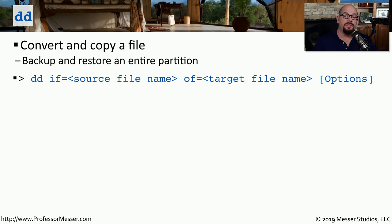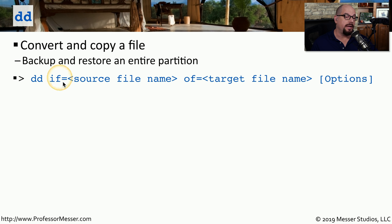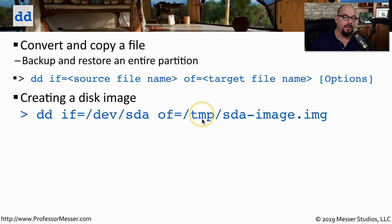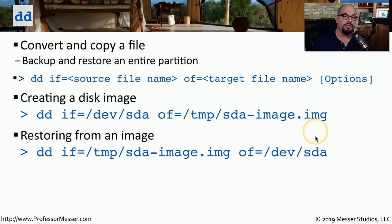If you're a system administrator imaging partitions at the Linux command line, you'll probably use the dd command, which converts and copies files and is also used to backup and restore images of entire partitions. The parameters include 'if' for the input/source file name, 'of' for the output file name, and any options. For example, 'dd if=/dev/sda of=/tmp/sda-image.img' creates an image of the partition. To restore, simply reverse the parameters: use the image file as input and the partition as output.